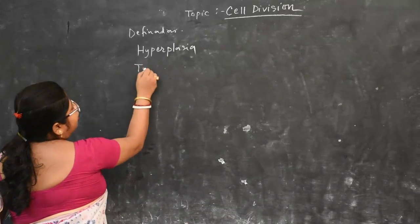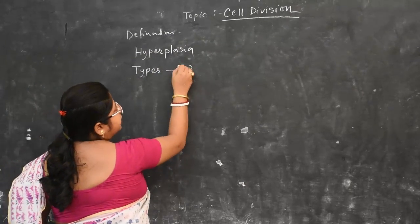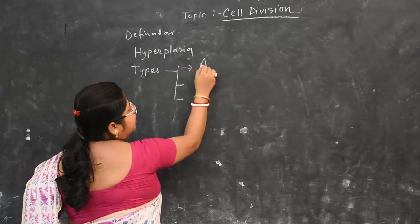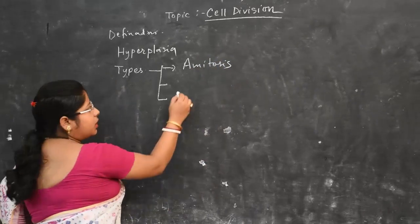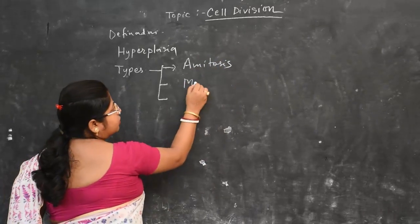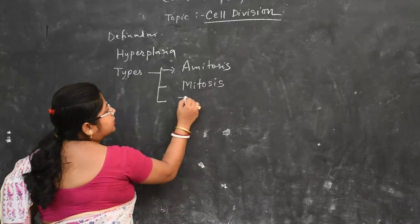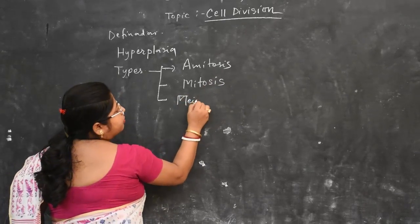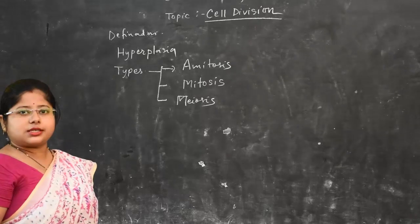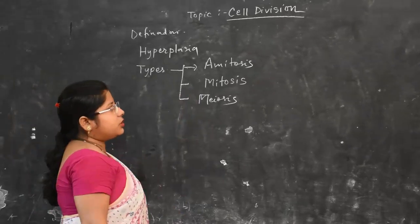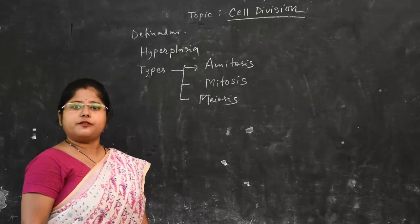The types of Cell Division are three: the first one is Amitosis, the second one is Mitosis, and the third one is Meiosis. After this, we will describe each individual definition of all these types of cell division.